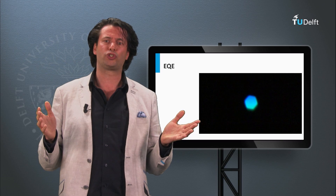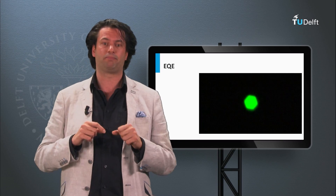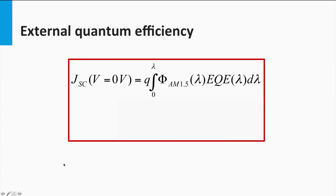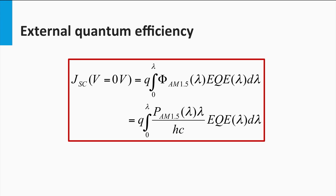How do we determine the short circuit current density from the EQE? Under standard test conditions, the solar spectrum is defined as the AM1.5 spectrum with a total power density of 1000 watts per square meter. The total current generated at a wavelength lambda is the elementary charge multiplied by the product of the photon flux phi at AM1.5 and the EQE. The total short circuit current density can be determined by integrating over the entire wavelength range. The spectral photon flux equals the spectral power density divided by the photon energy.